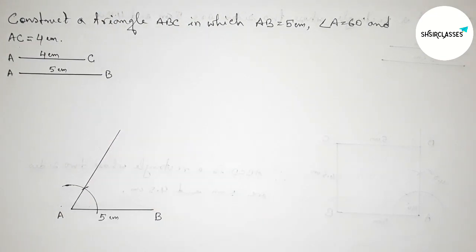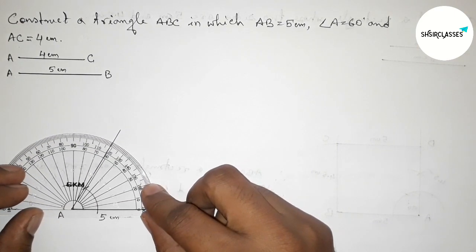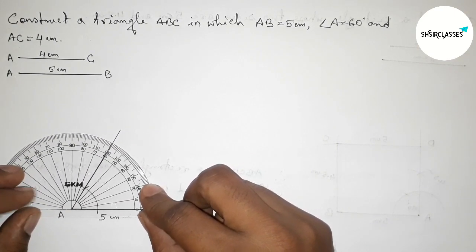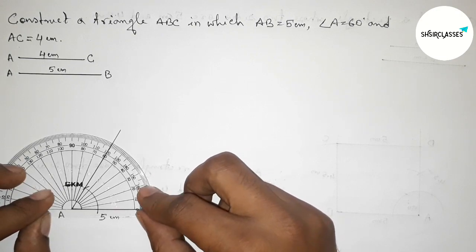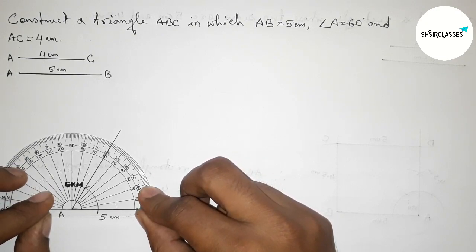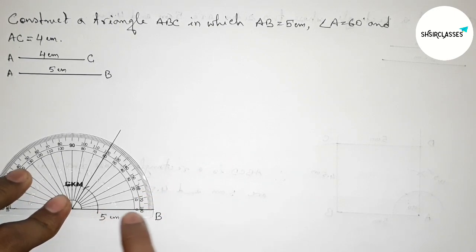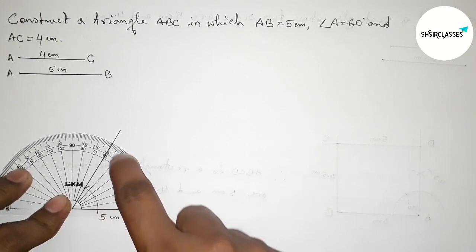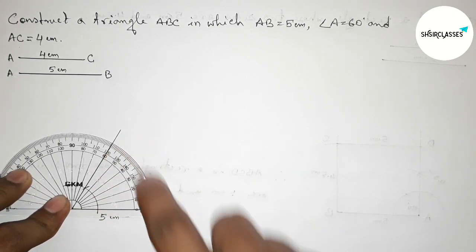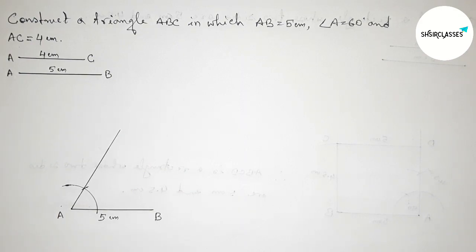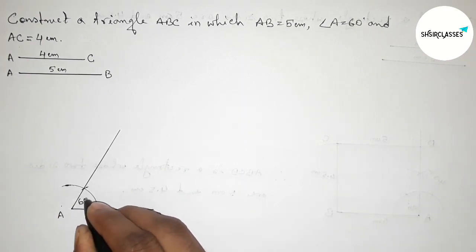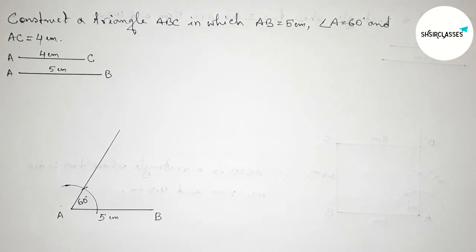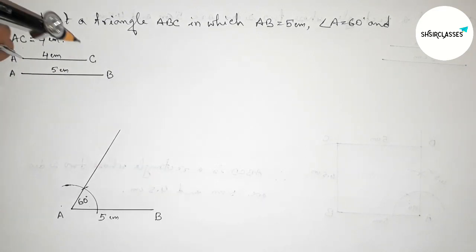Joining this to get the 60 degree angle. Now checking this angle with the help of a protractor — putting the protractor perfectly and checking whether it is 60 degrees or not. This is perfectly a 60 degree angle, so angle A equals to 60 degree.